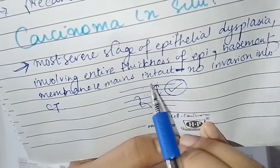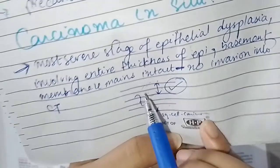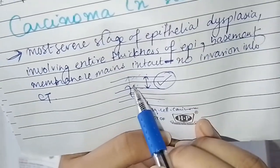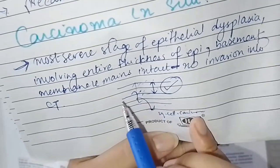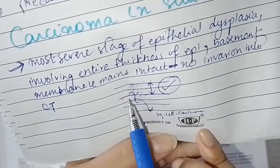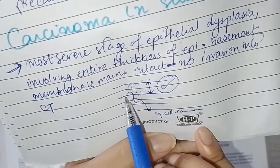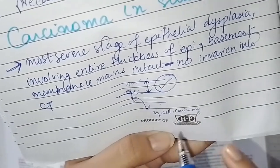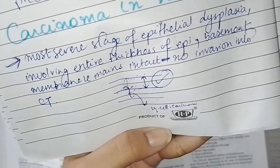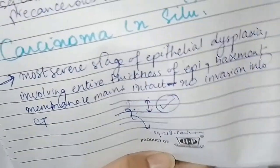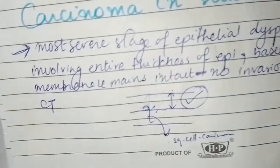In carcinoma in situ, the entire thickness of the epithelium will be dysplastic, but the basement membrane remains intact. If the basement membrane is breached, squamous cell carcinoma will occur. So in carcinoma in situ, the basement membrane remains intact.